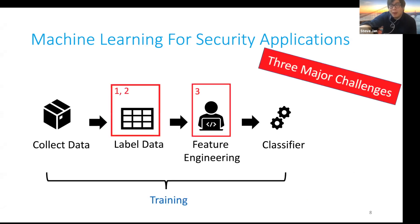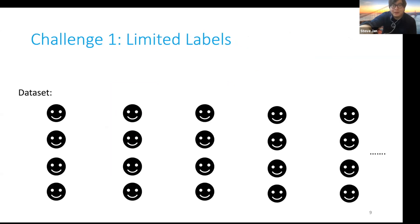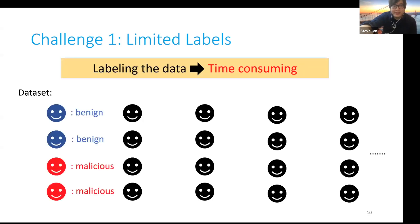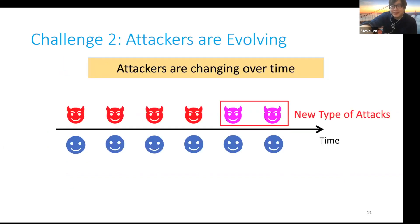In this typical pipeline, however, there are three common challenges. First challenge: limited labels. A robust machine learning model usually requires a good quality labeled dataset to represent the target distribution. However, it is very time-consuming to label the data. Second, attackers are changing over time. The malicious data is probably very different between now and one year ago.